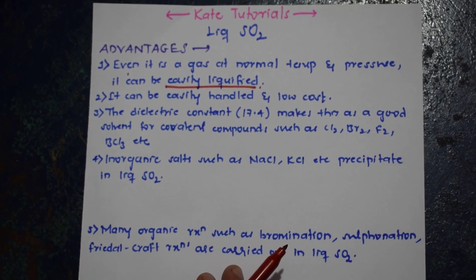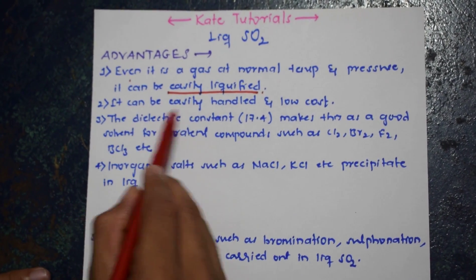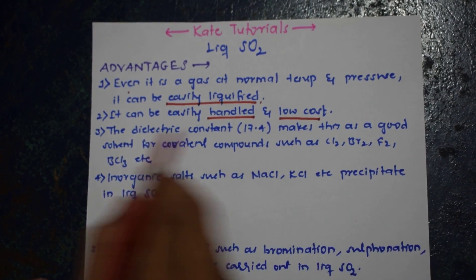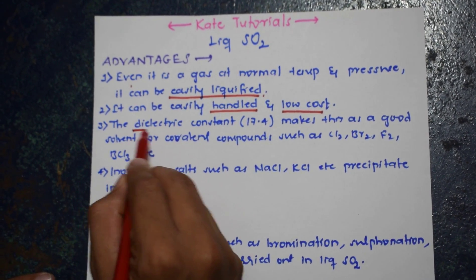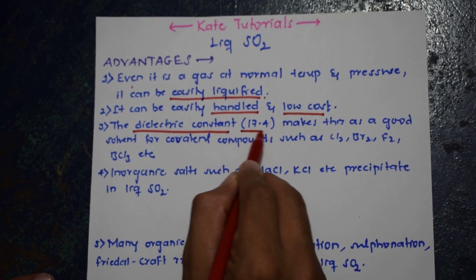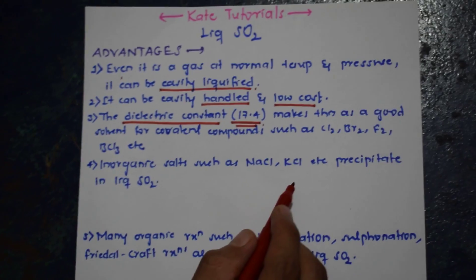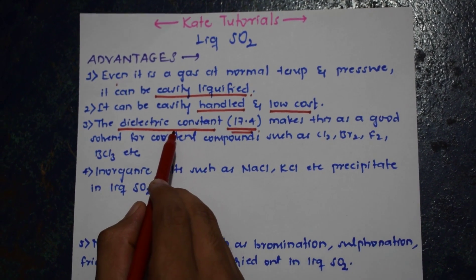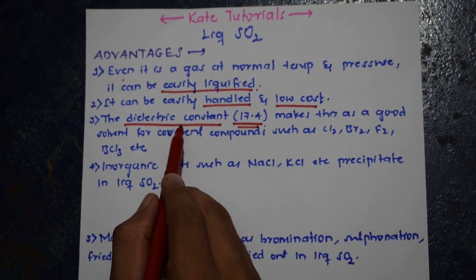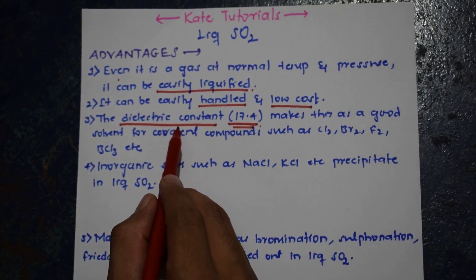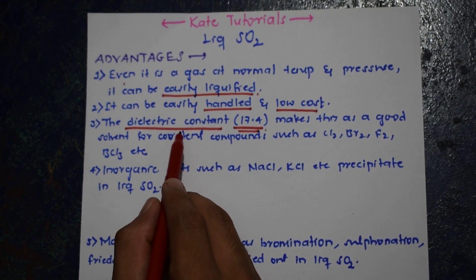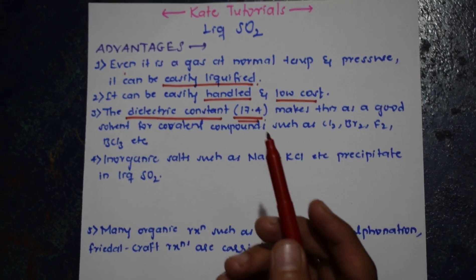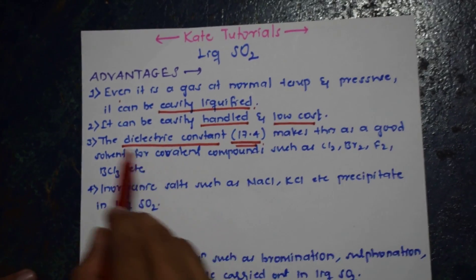It can be easily liquefied. The next point is it can be easily handled and its cost is less, so it is low cost. The third point is the dielectric constant of liquid sulfur dioxide is 17.4, which I have discussed in one of my videos in the same series of non-aqueous solvents. I have given the link of all the videos in my description.